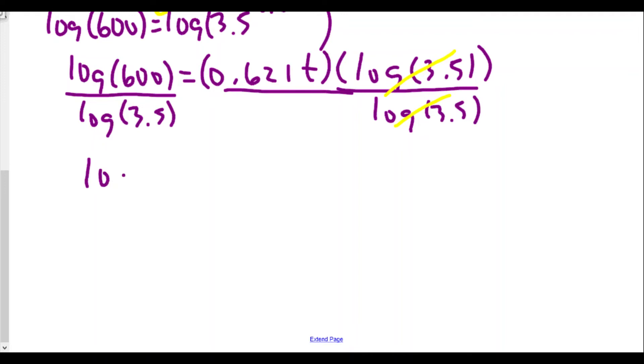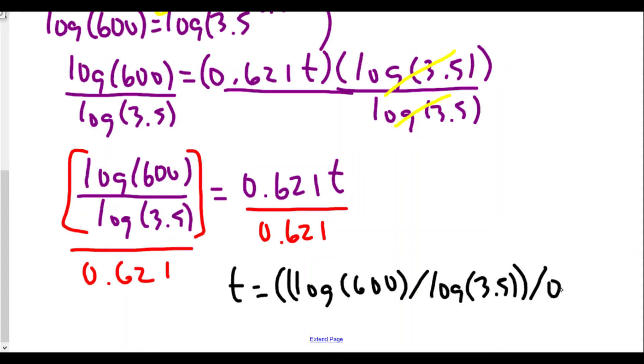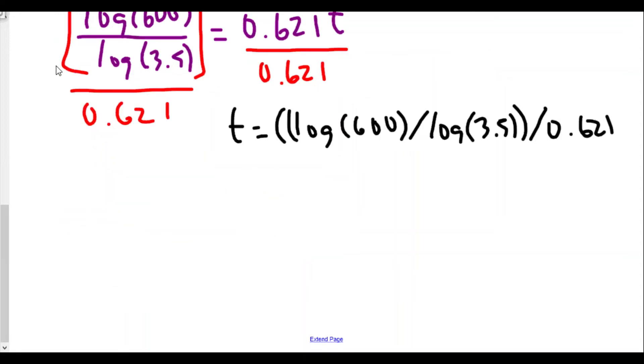But we don't want 0.621t, we actually want t by itself. So I'm going to put a big bracket around this left side and divide both sides by 0.621. So t will equal log(600) divided by log(3.5), divided by 0.621.